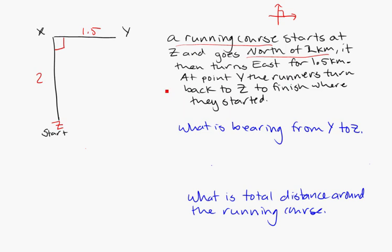So, at point Y, the runners turn back to Z and then run to finish the race. So, at Y, they're going to head back in the direction of Z, like so. So, we actually end up with a right angle triangle inside of here. And I do know a bit of information, but not too much. And they're asking me, what is the bearing from Y to Z? So, on this final turn that they make from Y to Z, how far do they run, or how far do they turn? So, to figure this out, I'm going to need to know an angle.